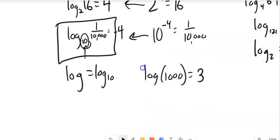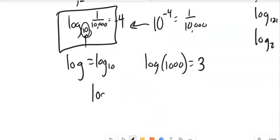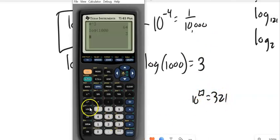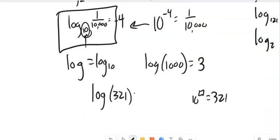So that's what log does. If I wanted to evaluate log of 321, notice what I'm saying is 10 to what power is 321? I'm not going to do that in my head. That's a calculator problem. So log of 321. Notice it's about 2.507. Just rounded it out to those three decimal places. So all those logs I can do on my calculator if it's base 10.